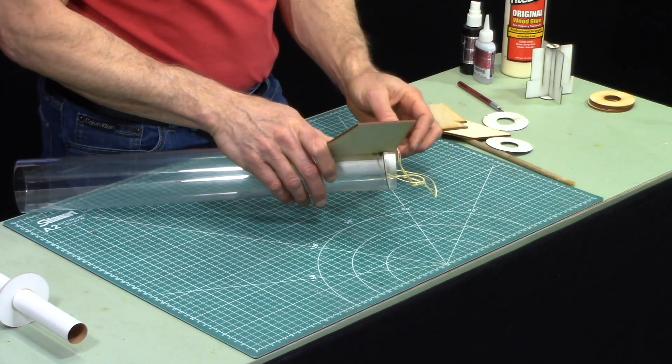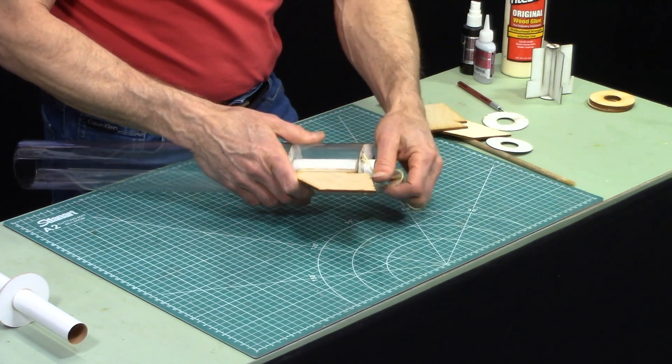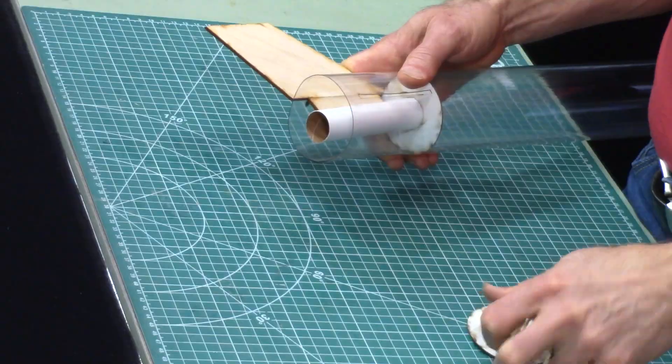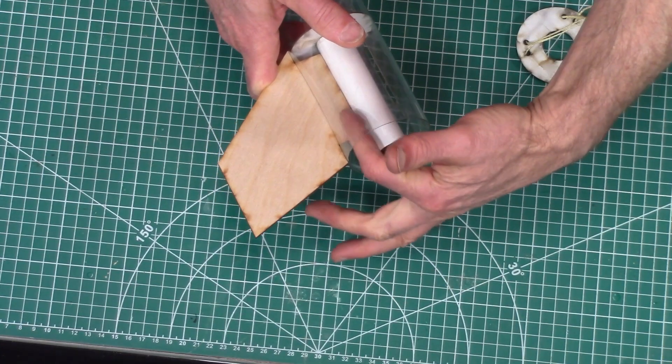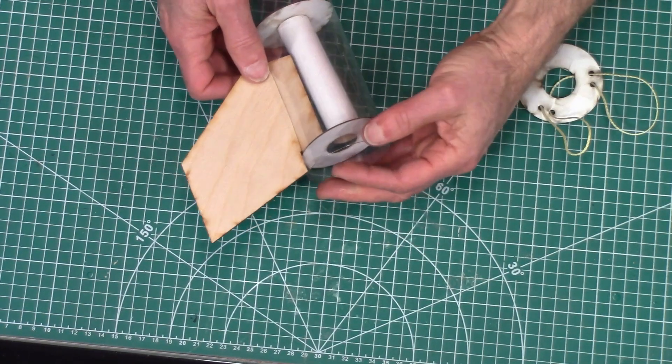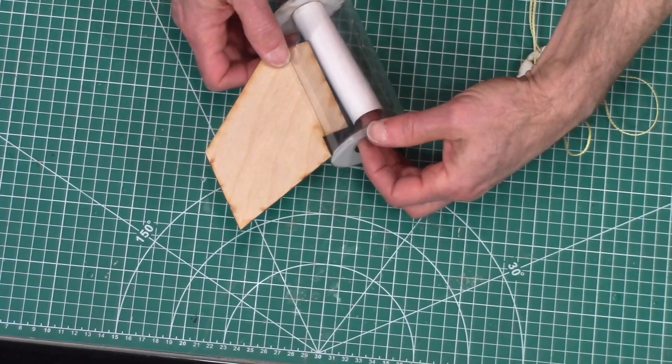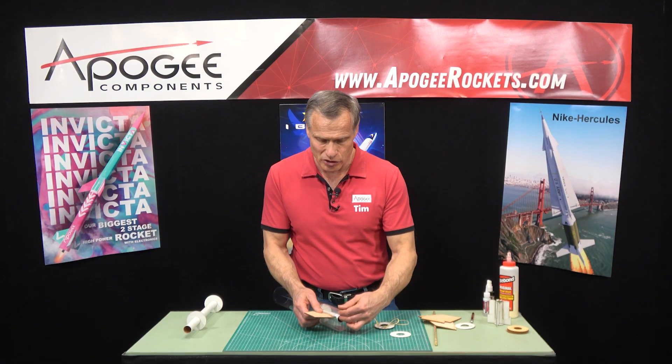And then once your fins are dry and all that glue is dry then you would pop this off, then come in, put your fin fillets in on the inside and you can finally put your back centering ring in there like that. So that's one method that you could do.